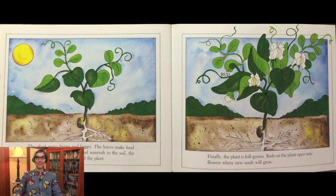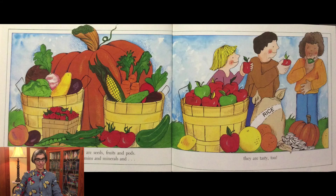Finally, the plant is full grown. Buds on the plant open into flowers where new seeds will grow. Many of the foods people eat are seeds, fruits, and pods. They are full of nutrition, vitamins, and minerals. And they are tasty, too.